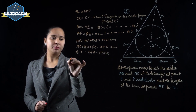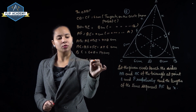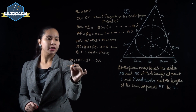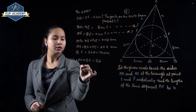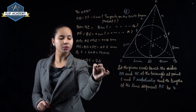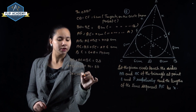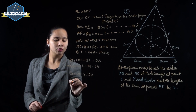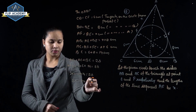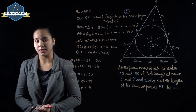Now for the perimeter: AB plus AC plus BC equals 2S. AB is X+8, AC is X+6, and BC is 14, so 2X + 14 + 14 equals 2S. Therefore 2S equals 2X + 28, and S equals X + 14.